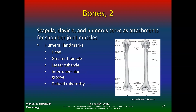Scapula, clavicle, and humerus serve as attachments for shoulder joint muscles. Humeral landmarks include the head, greater tubercle, lesser tubercle, intertubercular groove, and the deltoid tuberosity. Here's the head of the humerus, the greater tubercle, lesser tubercle, and the intertubercular groove where your biceps tendon goes in. Here's the deltoid tuberosity where the deltoid attaches. The radius would be here and the ulna on this side — this is a right humerus.